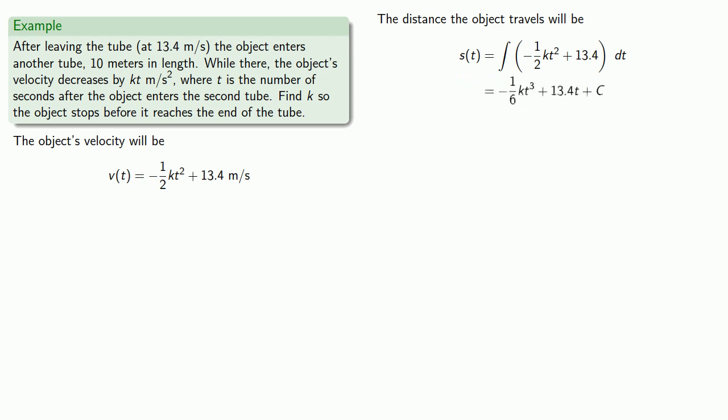We can calibrate and find this constant. Since t is the amount of time since the object entered the tube, we know that s of 0 is 0, and so our constant is also 0.